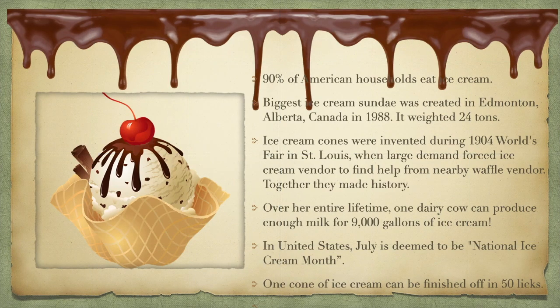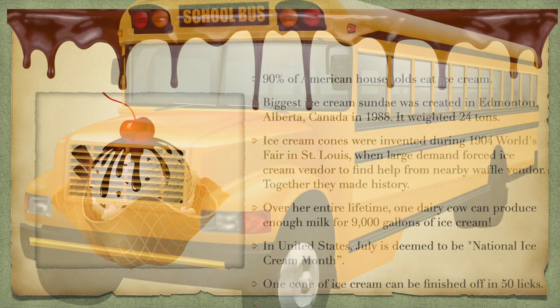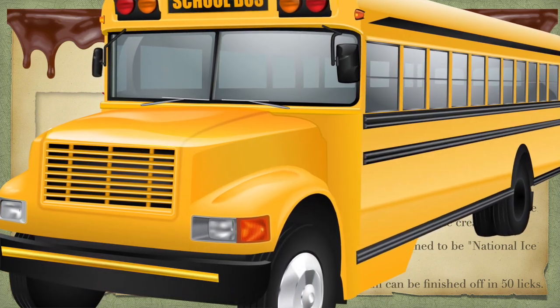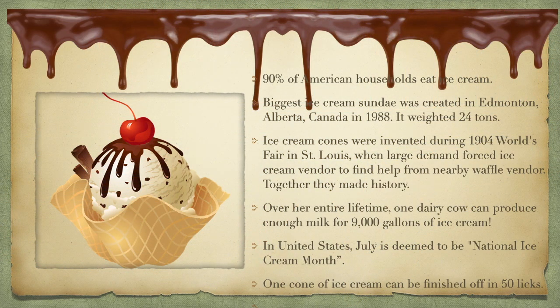How about some ice cream fun facts? 90% of American households eat ice cream. The biggest ice cream sundae was created in Canada in 1988 and weighed 24 tons. An average school bus weighs 17 tons, so this ice cream weighed more than a school bus. Ice cream cones were invented during the 1904 World Fair in St. Louis when there was a large demand for ice cream and the vendor ran out of cups. So he asked for help from the nearby waffle vendor, and together they made history.